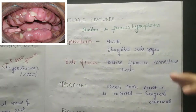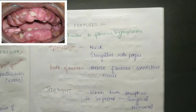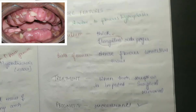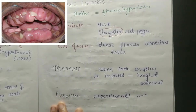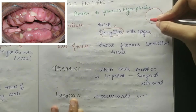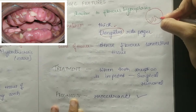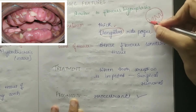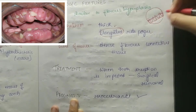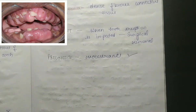For histologic features, fibromatosis gingiva is quite similar to fibrous hyperplasia. In the epithelium, you will see elongated rete pegs. Rete pegs are the elongated downward projections of epithelium seen in H&E diagrams. The bulk of tissue shows dense fibrous connective tissue. When tooth eruption is impeded, surgical removal is indicated.